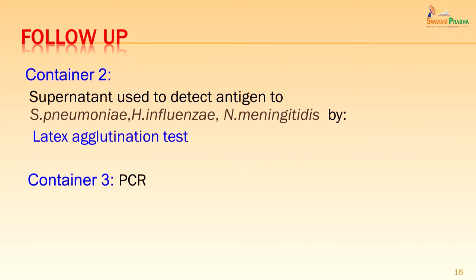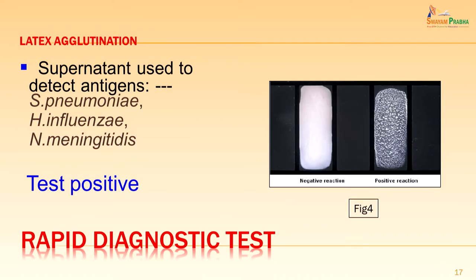The supernatant from container 2 was used to detect antigens by a rapid diagnostic test such as the latex agglutination test, which can confirm a diagnosis of Streptococcus pneumoniae, H. influenzae or Neisseria meningitidis on the CSF sample directly within a few minutes. Container 3 was kept in reserve for performing PCR to detect molecular genes of the bacteria. The latex agglutination test was positive in this patient, showing clumping, but this test cannot differentiate between the three pathogens — it just shows that one of them could be positive.